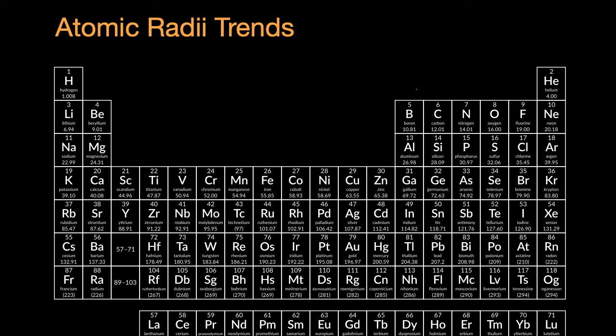As we continue into our journey of chemistry, we're gonna gain more and more appreciation for the periodic table of elements. We're gonna realize that it gives us all sorts of insights about how different elements relate to each other. And we're gonna talk about one of those insights, and that's atomic radii trends.